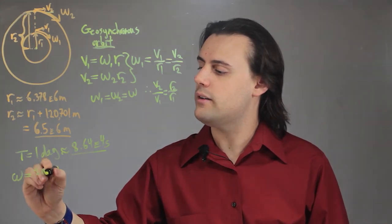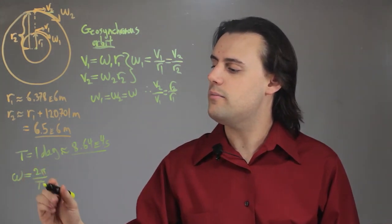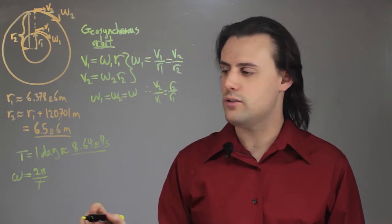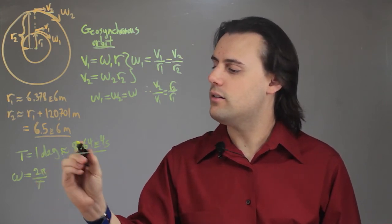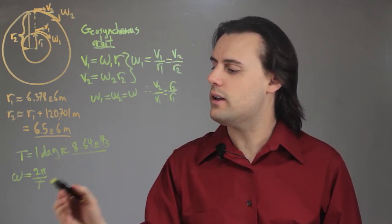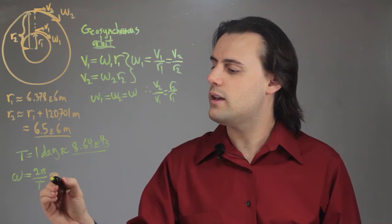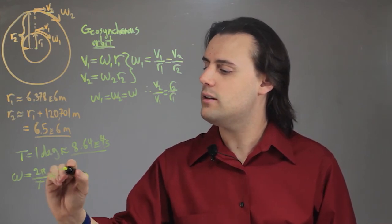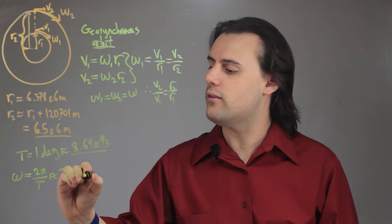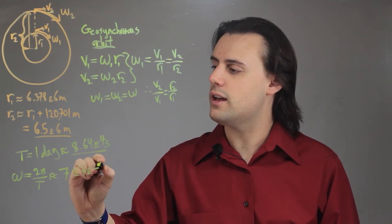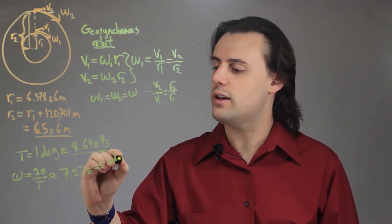is equal to 2 pi over the period. The units are in radians per second, and if we plug in this period into T, we get an omega of approximately 7.27 times 10 to the negative 5 radians per second.